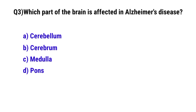Question No. 3: Which part of the brain is affected in Alzheimer's disease? The correct option is B: Cerebrum.